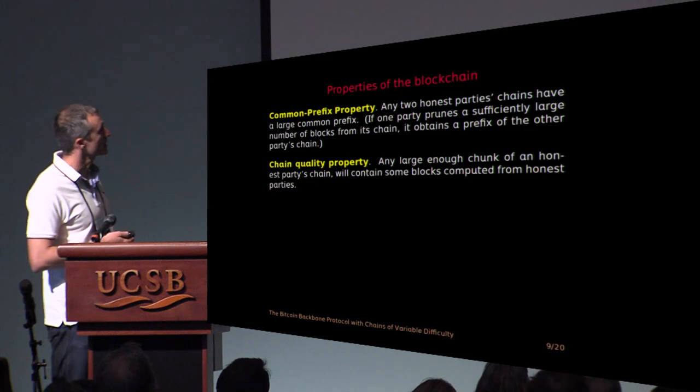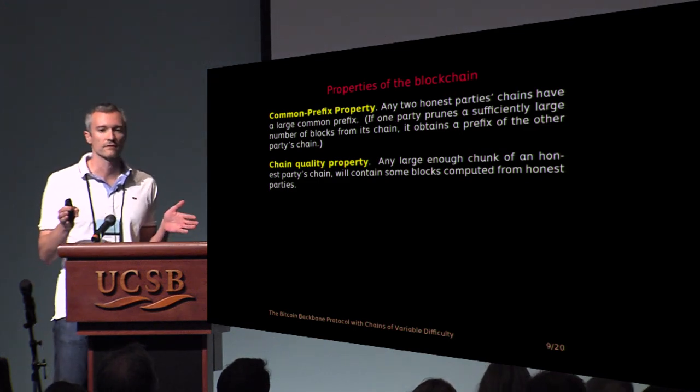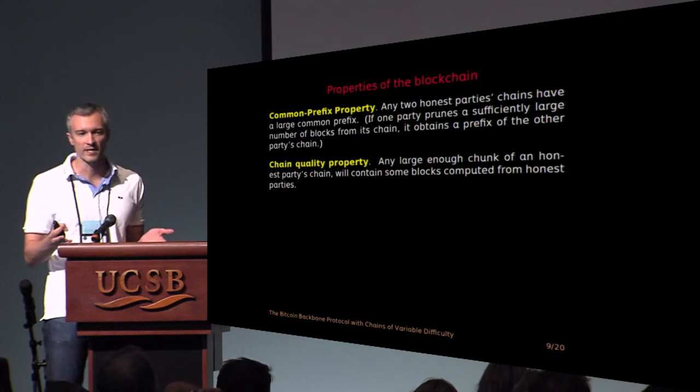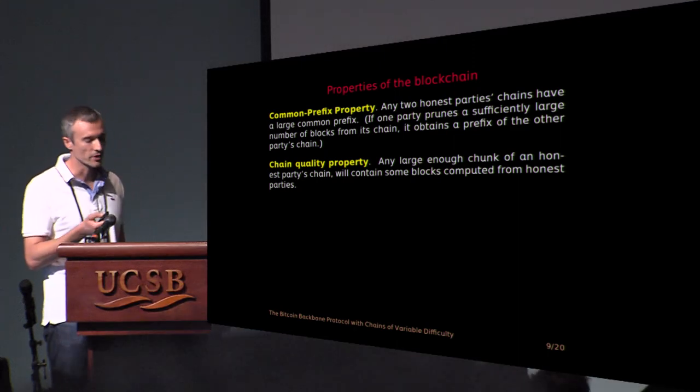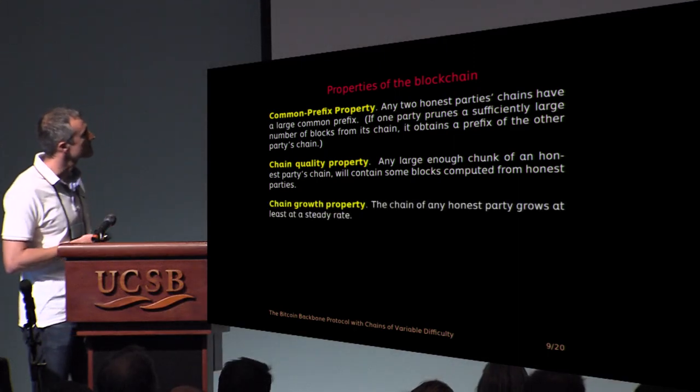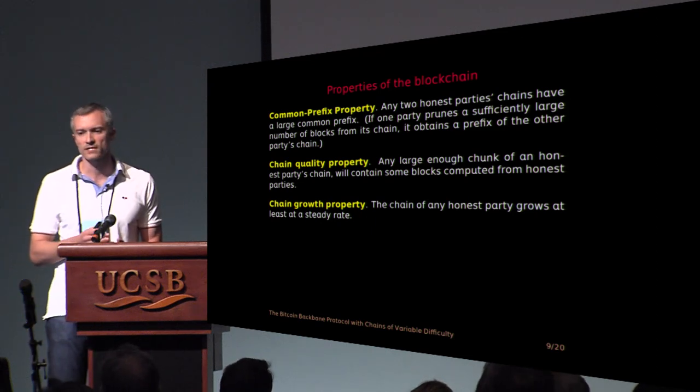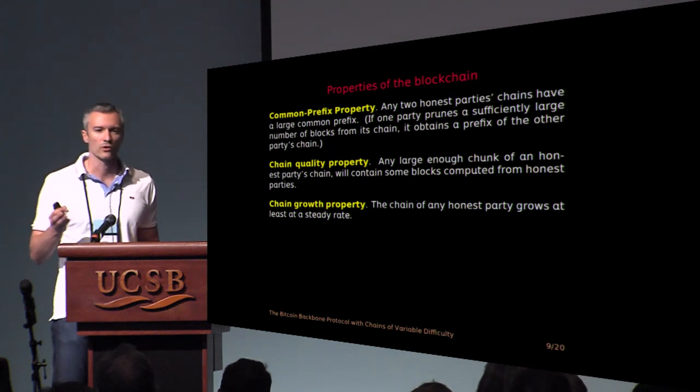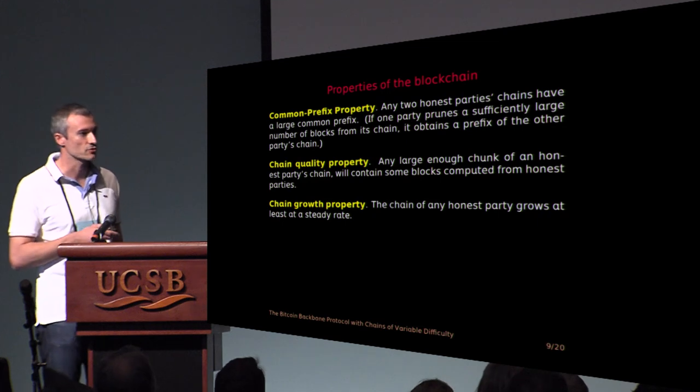Another property is the chain quality property. This means that if you look at a large enough sequence of blocks in the blockchain, then you will find among them enough blocks that come from honest parties. They're not going to be all adversarial. And finally, the chain growth property. In Bitcoin, this basically says that if the honest parties compute 100 blocks, then their chains will have grown by 100 blocks. The adversary cannot stop that.